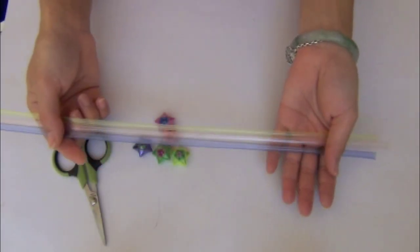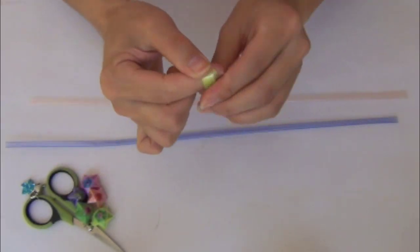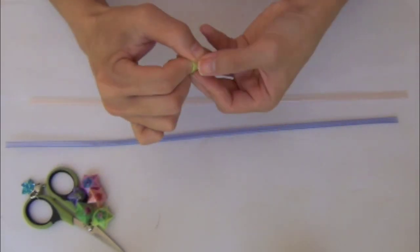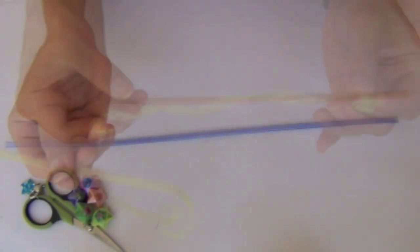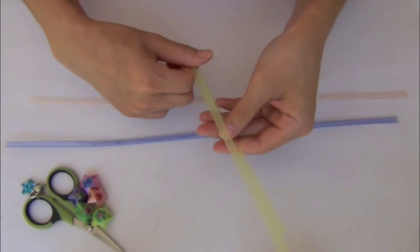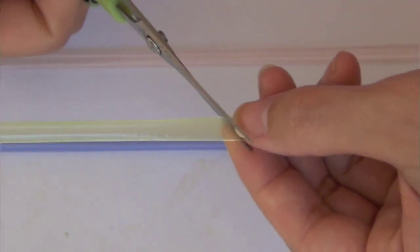I'm using three different colors of straws. First, you want to start out by rolling the straws onto your fingers to flatten it. After you release it, fold it in half to find the center point. Then use a scissor and cut the center point diagonally.